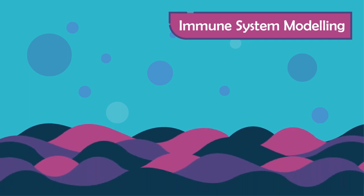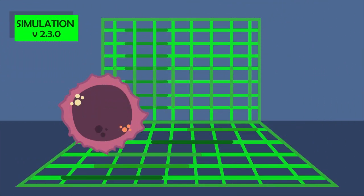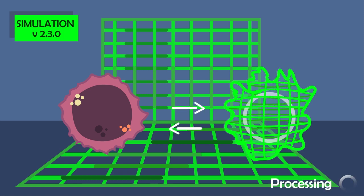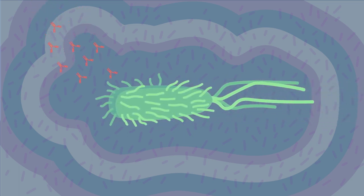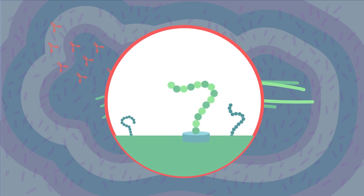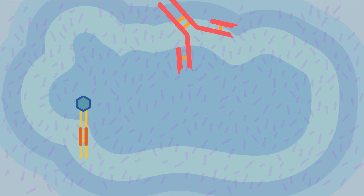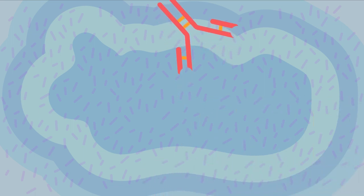Another great application immunoinformatics offers is immune system modeling. Advanced immunoinformatics databases are able to simulate the complex interactions of immune responses. Take the antibody-antigen interaction for example: antibodies are key proteins of the immune system, and each antibody only interacts with its specific antigens — molecules with specific conformations that allow antibody binding. This interaction depends on many factors like the nature of the antibody, the antigen, and their surrounding environment, so having a live simulation helps you understand the interaction efficiently.